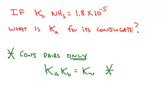Conjugate acid-base pairs are going to be very important. So here's a case where we have the Kb of NH3, a weak base, 1.8 times 10 to the negative 5th, and we want to calculate Ka for its conjugate.